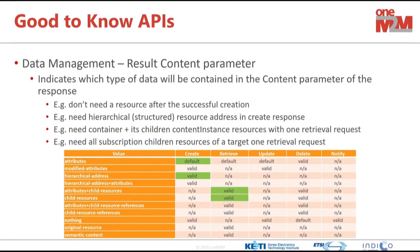Regarding good-to-know APIs: the result content parameter has been updated a couple of times. Depending on the operation you fire to the platform, you can expect different results in the response. For example, you can retrieve a resource, but by changing settings you can get more than one resource starting from the target.